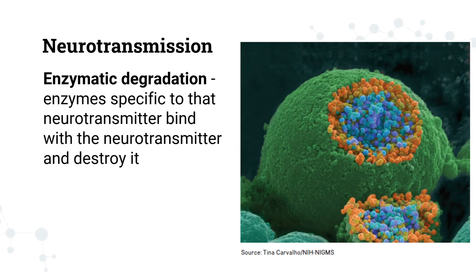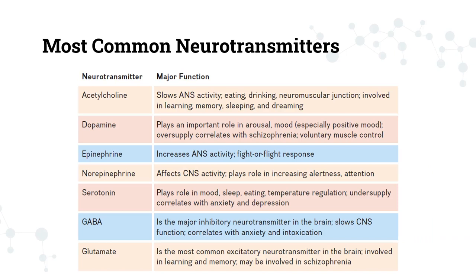Now let's look at the specific neurotransmitters in our body. First, acetylcholine — its main function is to slow the activity of the autonomic nervous system. It's involved in eating, drinking, the neuromuscular junction, and sometimes also in learning, memory, sleeping, and dreaming. Among people with Alzheimer's disease, they have low amounts of acetylcholine, so interventions may include acetylcholine-related treatments.